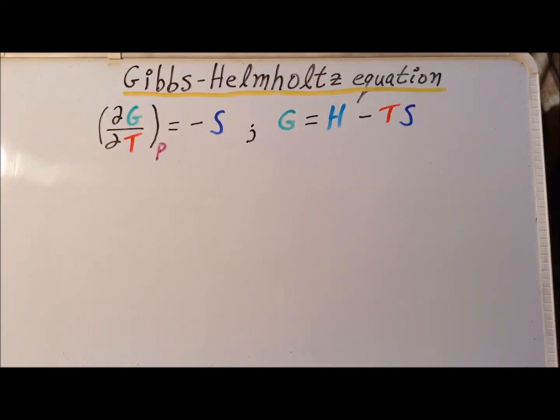We also recall that by definition, the Gibbs energy G is equal to the enthalpy H minus T, the temperature, times the entropy S.